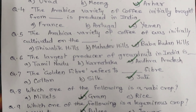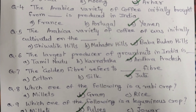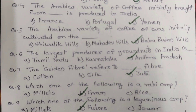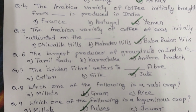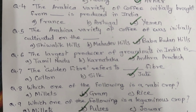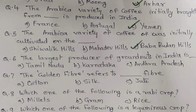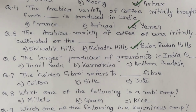Question 5. The Arabica variety of coffee was initially cultivated on which hills? Options are A. Siwalik Hills. B. Mahadev Hills. C. Baba Budan Hills. And the correct answer is C. Baba Budan Hills.